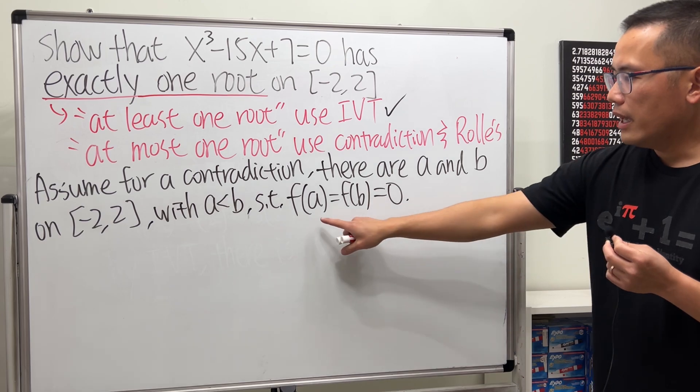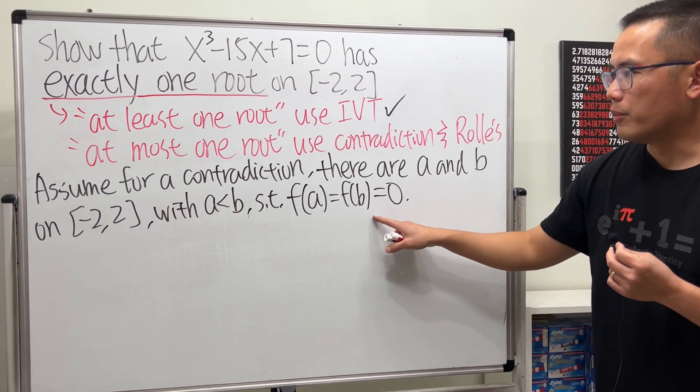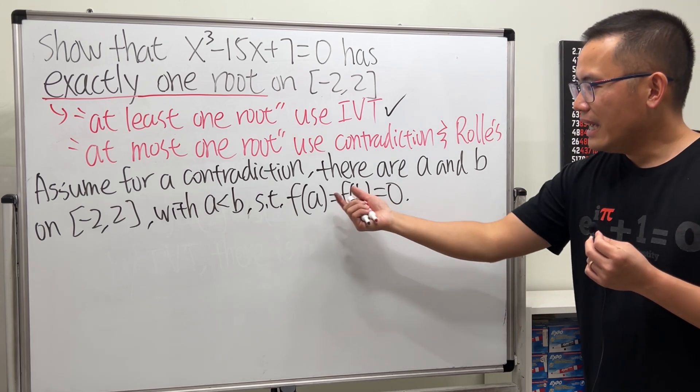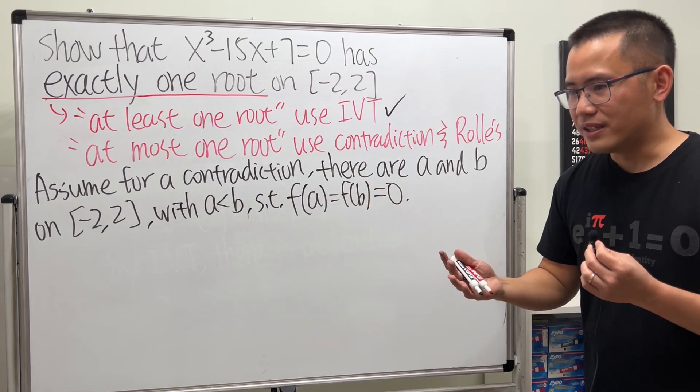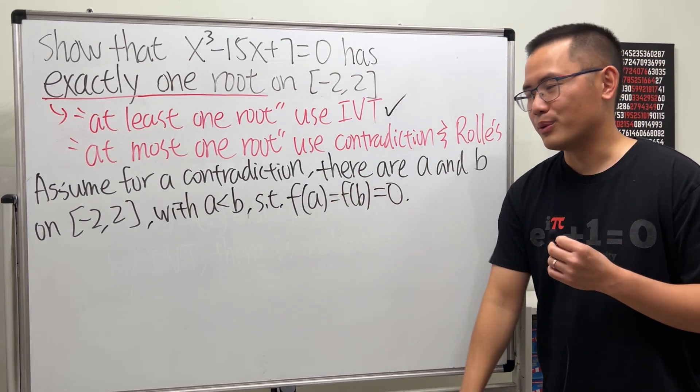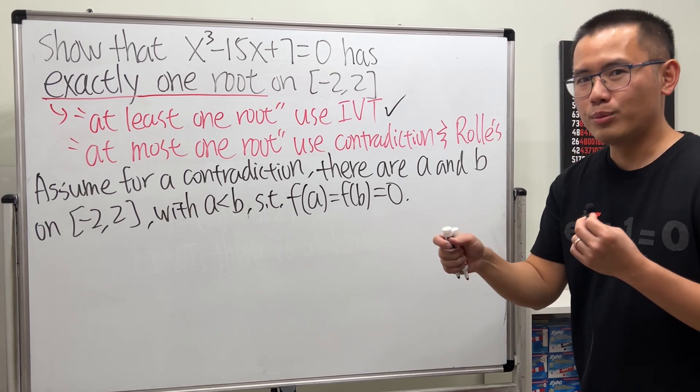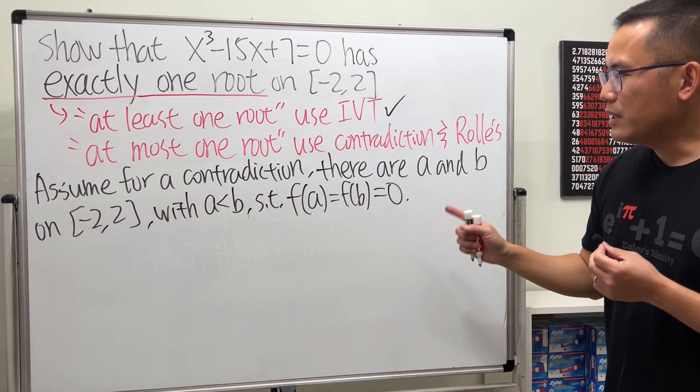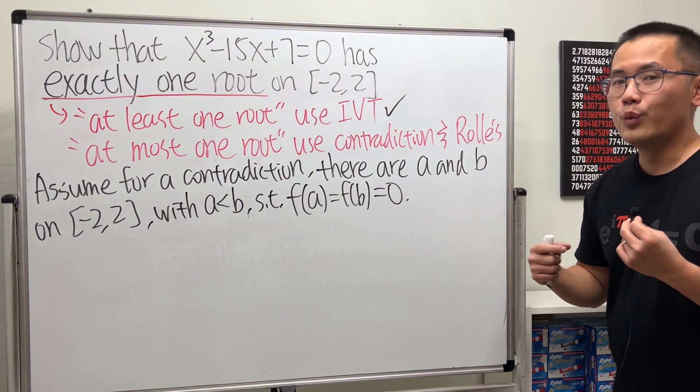Now when we have f of a is equal to f of b, this is the time that we use Rolle's Theorem. If f of a and f of b are different, then you say Mean Value Theorem and then you do the slope of the line connecting the endpoints. But anyways, before we can use Rolle's Theorem we have to mention the following.